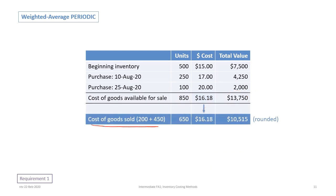Finally, to determine cost of goods sold, we take the number of units sold — 200 units and another 450, for a total of 650 units sold — and multiply by the average cost of $16.18, giving us a cost of goods sold of $10,515. Make sure you do not use the selling price here. A common mistake students make is to use the sales price to calculate this number, but that is wrong. We must use the cost of goods.